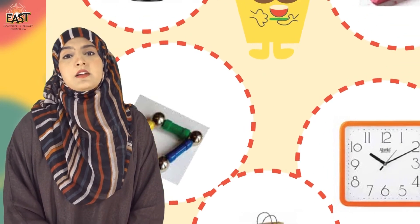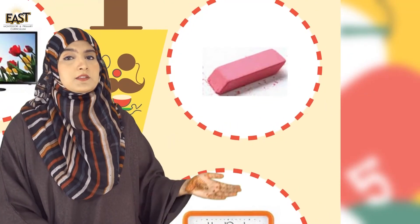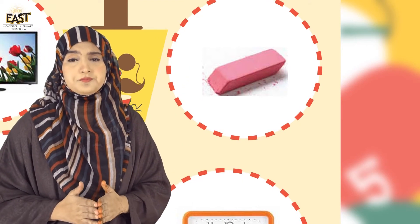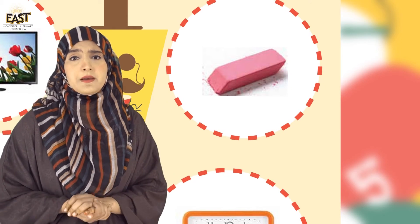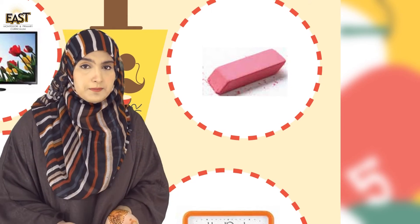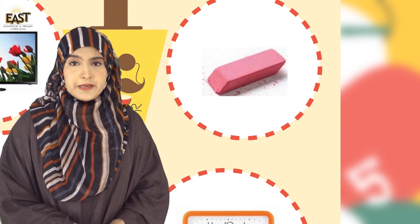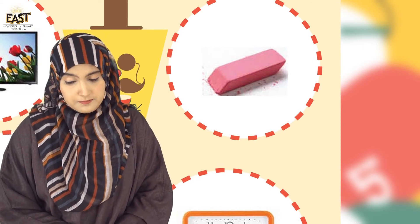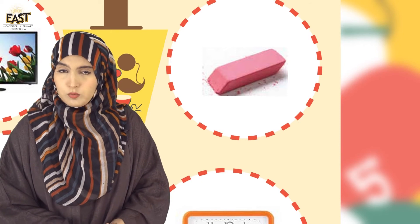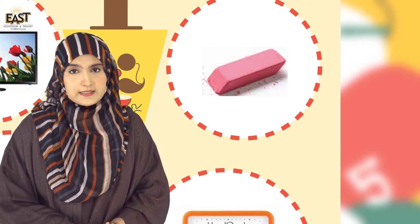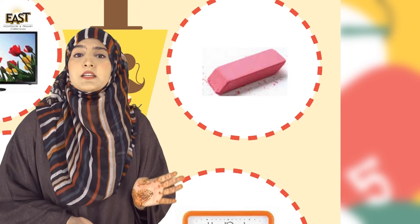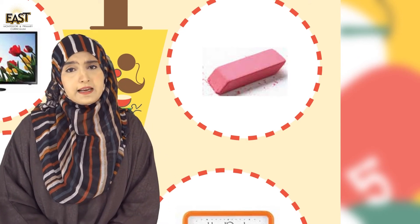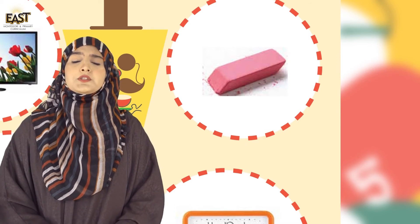Now we have another picture which is this eraser. What shape do we call it? No, it is not a trapezoid — this is a parallelogram, which we discussed in our previous class. If you don't remember, don't worry about it.